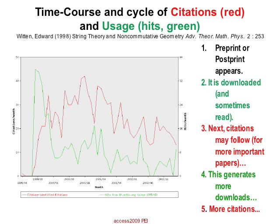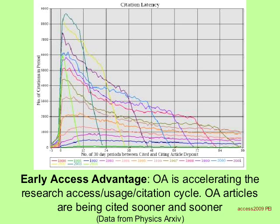Later I'll show you cumulative download and citation graphs. This is the early access advantage. Open access is accelerating the research cycle from access to usage to citation. Open access articles are being cited sooner and sooner — sometimes as soon as a few weeks after they've been self-archived.